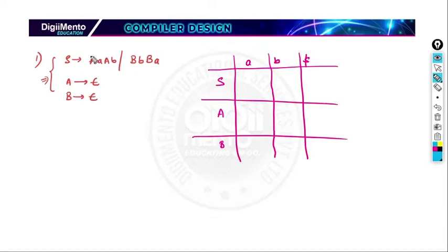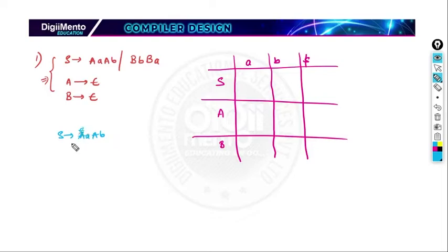For the first production S → ABa, let us calculate the FIRST of S. FIRST of S is FIRST of A. FIRST of A is epsilon, so A vanishes and we can write FIRST of S as small a. So we write this production in the column for small a.